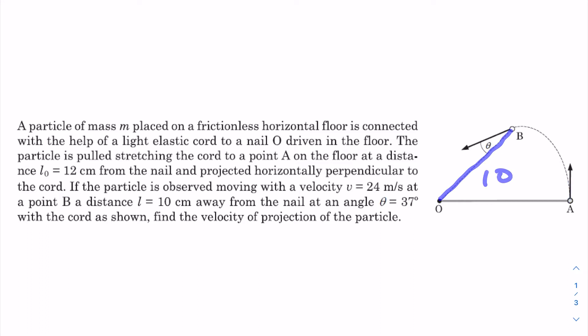And this angle is 37 degrees with the cord as shown. Find the velocity of projection of the particle. So I need initial V₀.